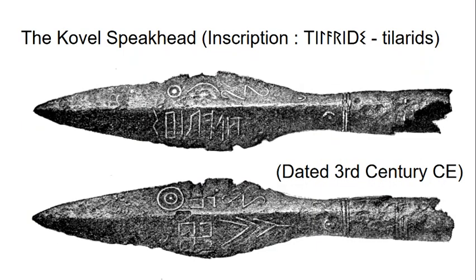One of these is the Kovel spearhead, and the inscription reads something like 'tilarids,' meaning roughly 'riding towards' — a kind of pointer, possibly a good luck charm hoping the spear will catch its target. This is dated to around the third century CE.